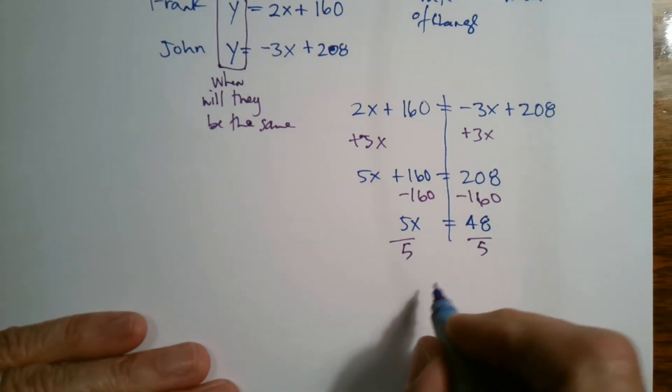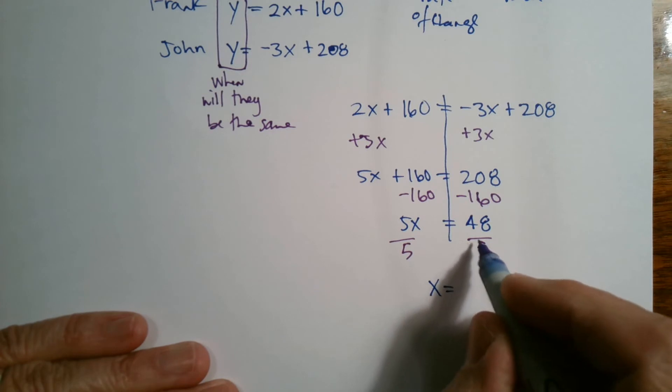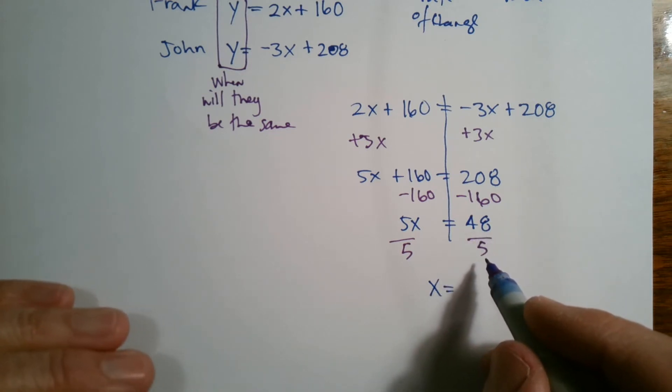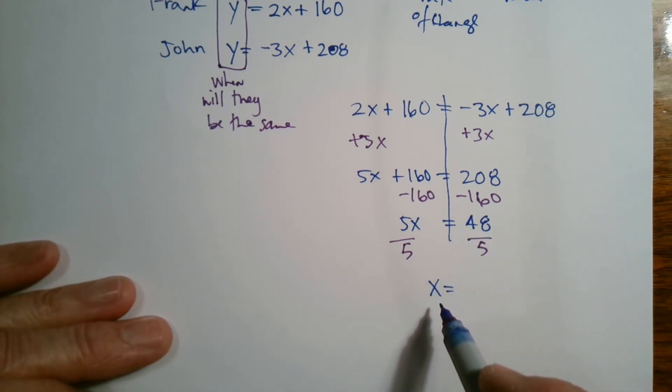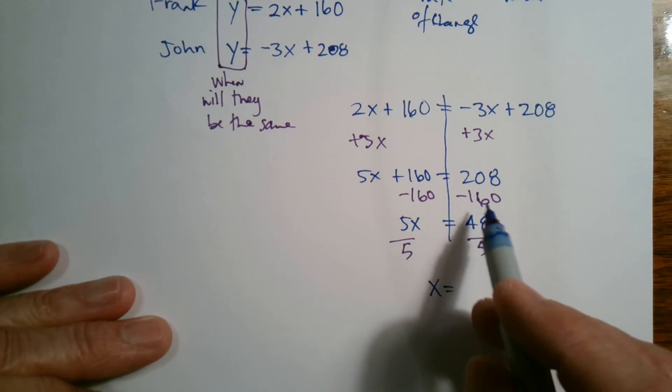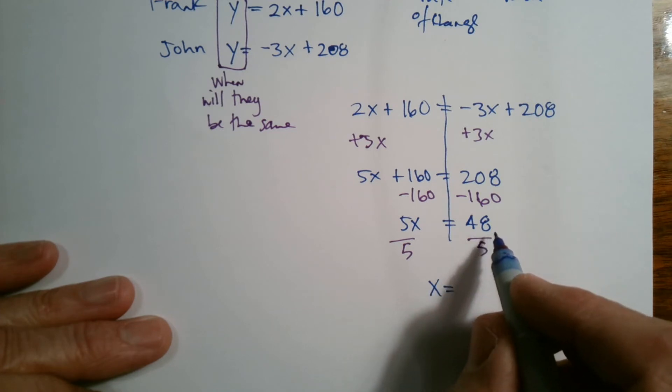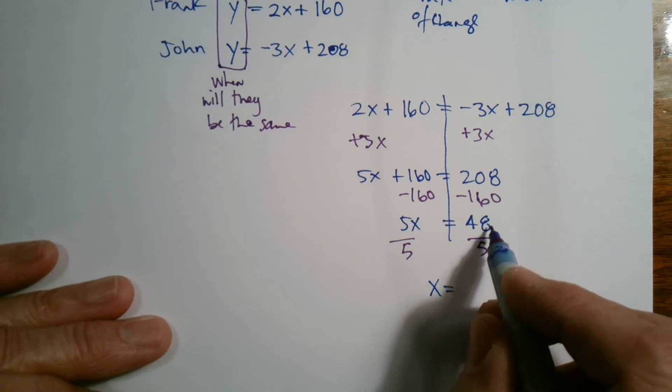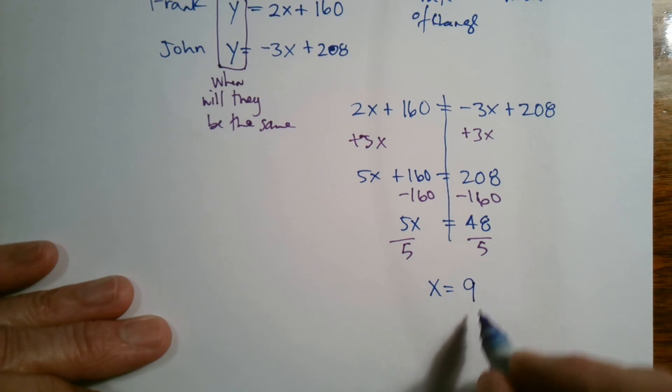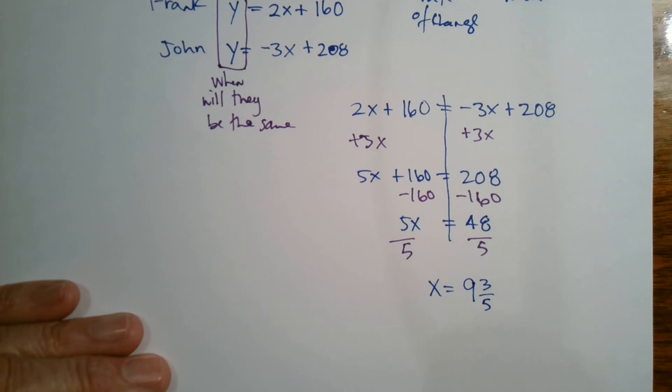And we have X is equal to, well, 48 over five. 48 doesn't divide evenly by five. So we can either put this in decimal form or a mixed fraction, mixed number to just kind of see what we're dealing with here. So I'm going to go ahead and put it in a mixed number here. So five goes into 45, I know nine times, right? And then there'd be three leftover. So it's nine and three fifths.